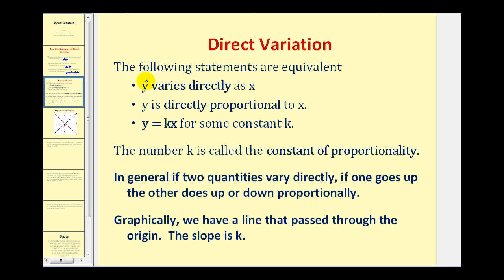For direct variation, the following statements are the same or equivalent. If we're told that Y varies directly as X, or Y is directly proportional to X, or we have the equation Y equals K times X for some constant K, these all mean we have direct variation. And the number K is called the constant of proportionality.